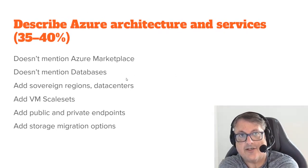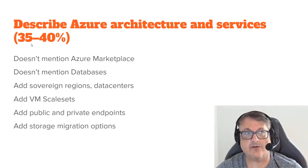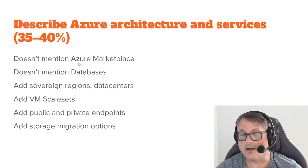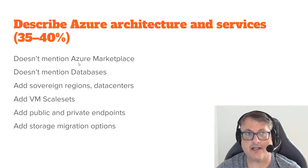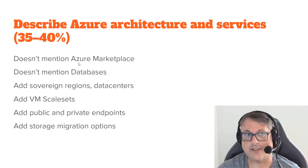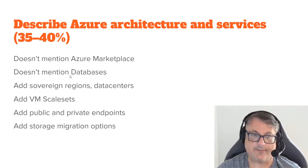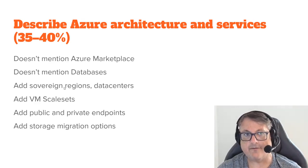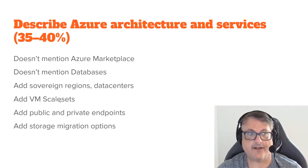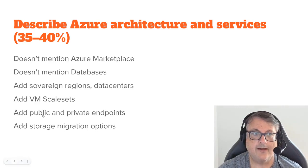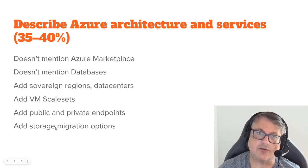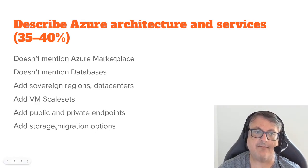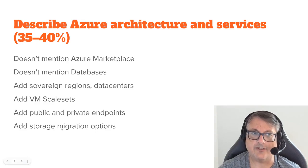The second section is 'describe Azure architecture and services,' and that's a huge 35 to 40%. A lot of that stuff has been moved up. There's no mention of Azure Marketplace. They've taken out all of the SQL database, SQL Server, and Azure managed instance. VM scale sets was not on the previous version but is now included. Public and private endpoints are there. Storage topics are more in-depth now — not just access tiers, but redundancy, migration, and Storage Explorer — which wasn't on the exam before.